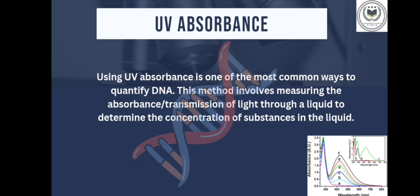First, UV absorbance. Using UV absorbance is one of the most common ways to quantify DNA. This method involves measuring the absorbance and transmission of light through a liquid to determine the concentration of substances in the liquid.